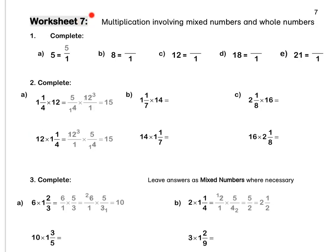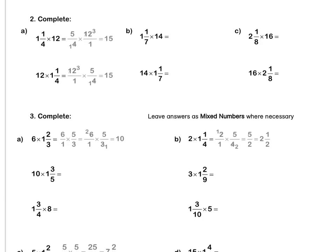Worksheet 7, Question 1: press pause to complete by yourself. Question 2: 1 and a quarter, we rewrite as five quarters. 12 we put over 1. Then we simplify in our question, we multiply out to get 15.